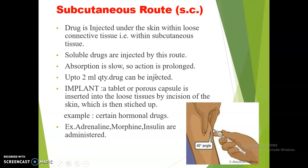The next route is the subcutaneous route. Here, the drug is injected under the skin within the loose areolar connective tissue, that is the subcutaneous tissue. As shown in the diagram, the skin is held to form a fold and the drug is injected within the loose connective tissue. The needle and syringe are held at a 45-degree angle. Only soluble drugs are injected by the subcutaneous route. The drug forms a depot within the subcutaneous tissue, so absorption is slow but uniform and action is prolonged. Up to 2 ml can be administered by this route. Implants — a novel drug delivery form where a tablet or capsule is inserted within this loose tissue through a skin incision — slowly release the drug over a prolonged duration.